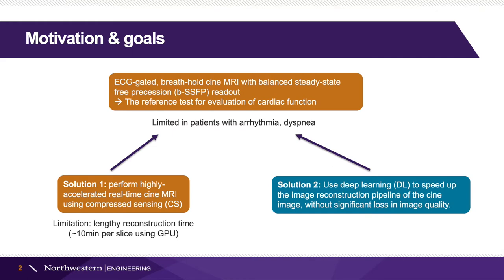But these methods are limited in patients with arrhythmia and/or dyspnea. The first solution is to perform highly accelerated real-time cine MRI using compressive sensing. However, it involves a really lengthy reconstruction process — around 10 minutes per slice even using GPU. That's why deep learning comes into the picture.